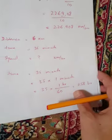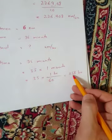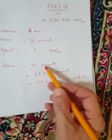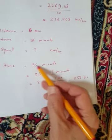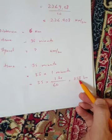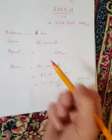35 times 1 over 60 equals 0.58 hours. That's how we convert minutes to hours. 0.5 means half - half an hour is 30 minutes, so 0.58 is a bit more than half an hour.